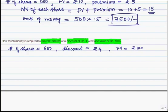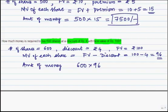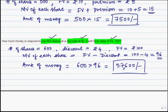Discount means the market value is less than the face value — less by Rs 4. So the market value of each share will be the face value minus the discount amount, which is Rs 100 minus Rs 4, giving a market value of Rs 96. To purchase 600 shares each at Rs 96, the total amount is 600 into 96, which equals Rs 57,600.